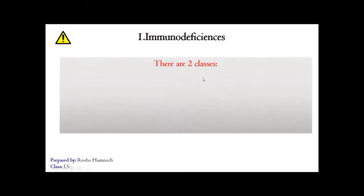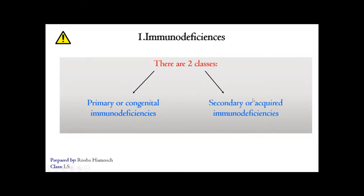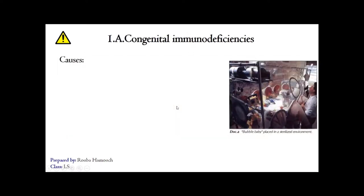Immunodeficiency comprises two classes. The first is primary or congenital immunodeficiencies, which are present since birth. The second class is secondary or acquired immunodeficiencies, which are acquired due to exposure to environmental factors, lifestyle, certain treatments or drugs, or infection with some viruses.